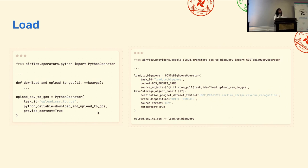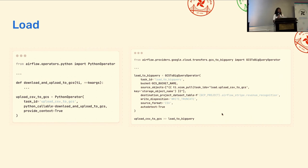Once everything is in there, the end result is data in your data warehouse, located in a schema called 'airflow_stripe_revenue_recognition'. It's pretty standard that when you load data from a source into a data warehouse, you follow the naming convention of source tool underscore dataset. But because this is raw data, it probably includes metadata, different naming conventions for columns, and things you just don't want to send to your end users. So it might not suffice to just tell Kevin to query from this table directly.